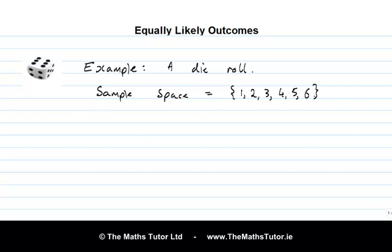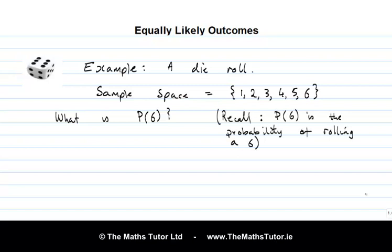Now suppose that we want to calculate the probability of just one of these outcomes. For example, let's say we want to calculate the probability of rolling a 6. We've seen in an earlier lesson that one key thing about probabilities is that if we add up the probabilities of all the outcomes, we get 1.